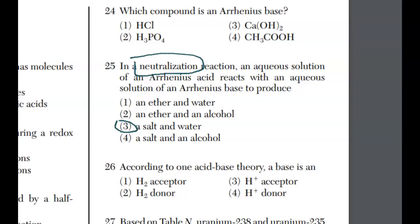On to 26, according to one acid-base theory, a base is what? Arrhenius's theory says a base produces OH- in solution, and an acid produces H+. The other acid-base theory is all about being a H+, or proton acceptor or donor. By definition, a base is a H+ acceptor. It's a fact. Know it. Write it down so you don't forget it when you practice other questions.